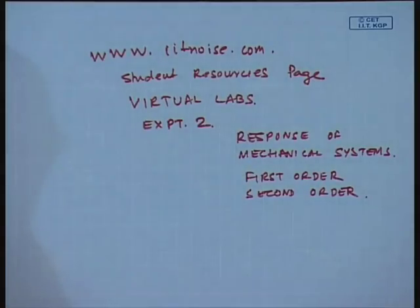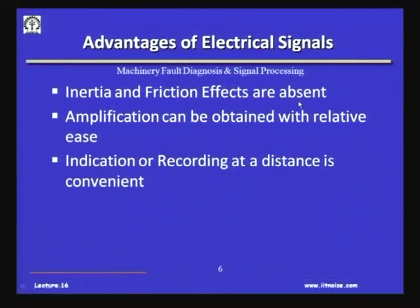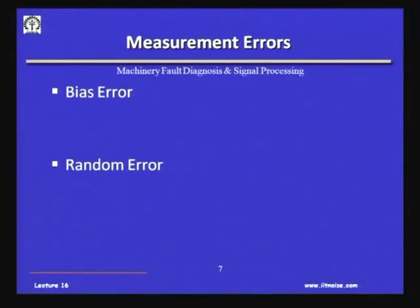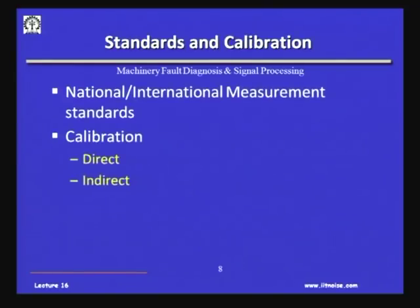Why do we always use electrical signals? Because inertia and friction effects are absent, amplification can be obtained with relative ease, and recording from a remote distance is also possible — electrical signals can be transferred over large distances, which is not possible by mechanical linkages. That is why transducers traditionally use sensing elements that give an electrical output. Calibrations and measurements must be done as per international standards so that data is reproducible and can be exchanged between different communities and groups.